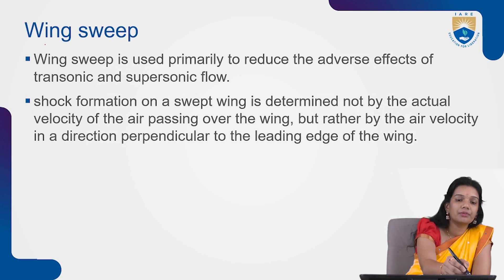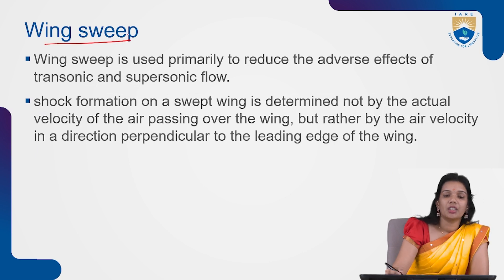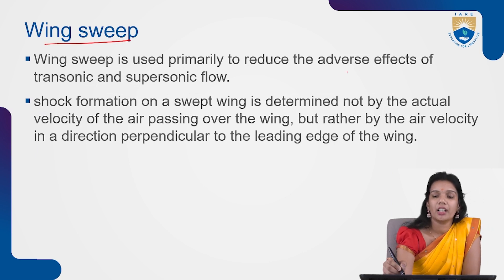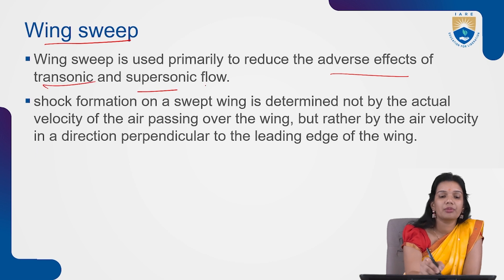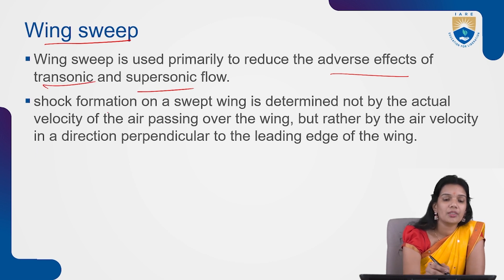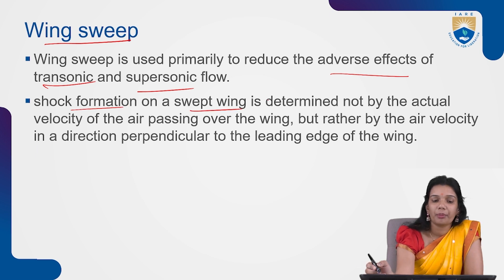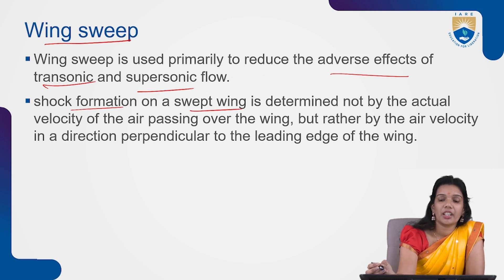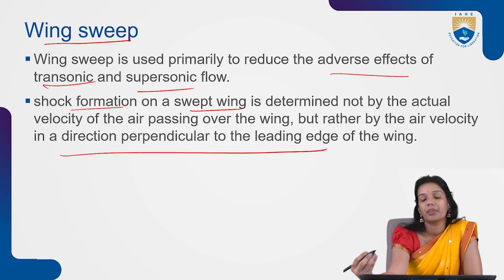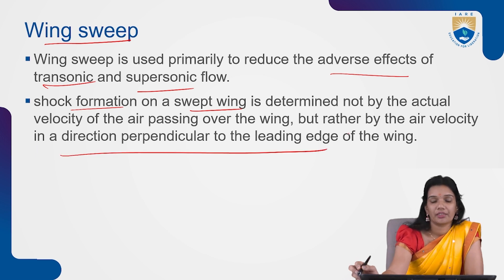Wing sweep is used primarily to reduce adverse effects at transonic and supersonic speeds. The shock formation on a swept wing is determined not by the velocity of the air, but by the air velocity in the direction perpendicular to the leading edge of the wing.